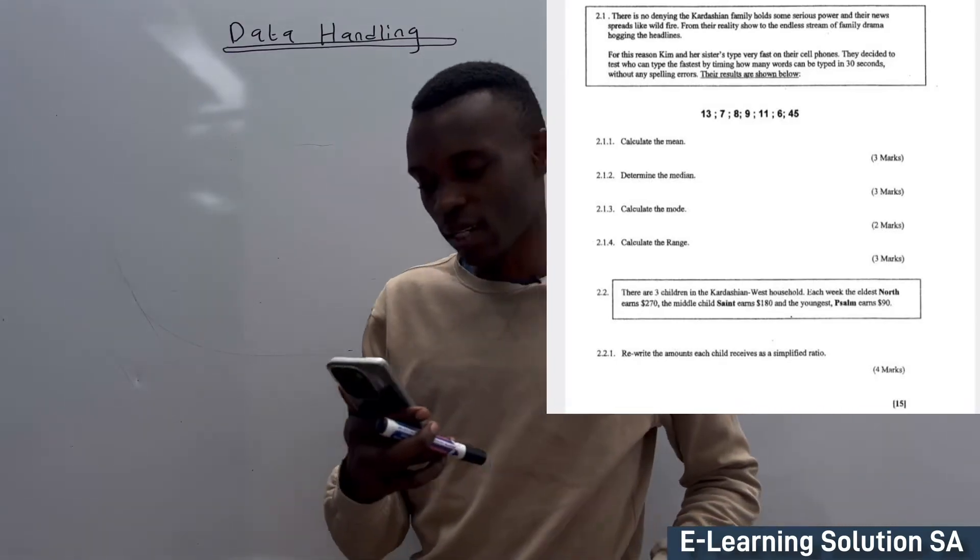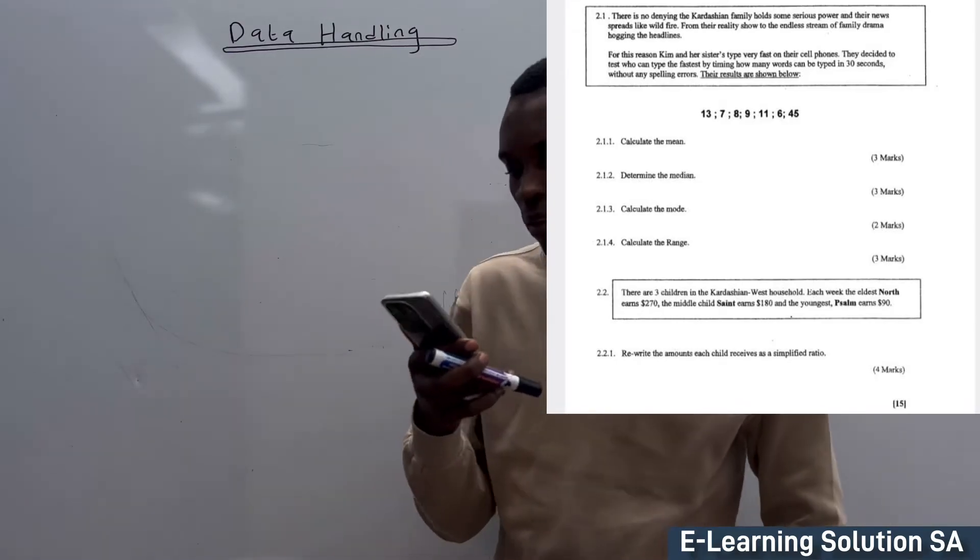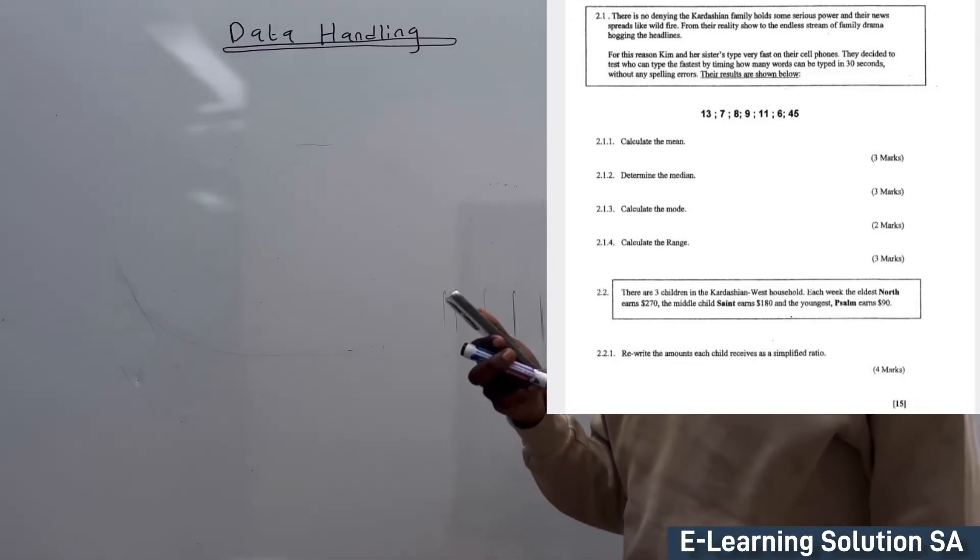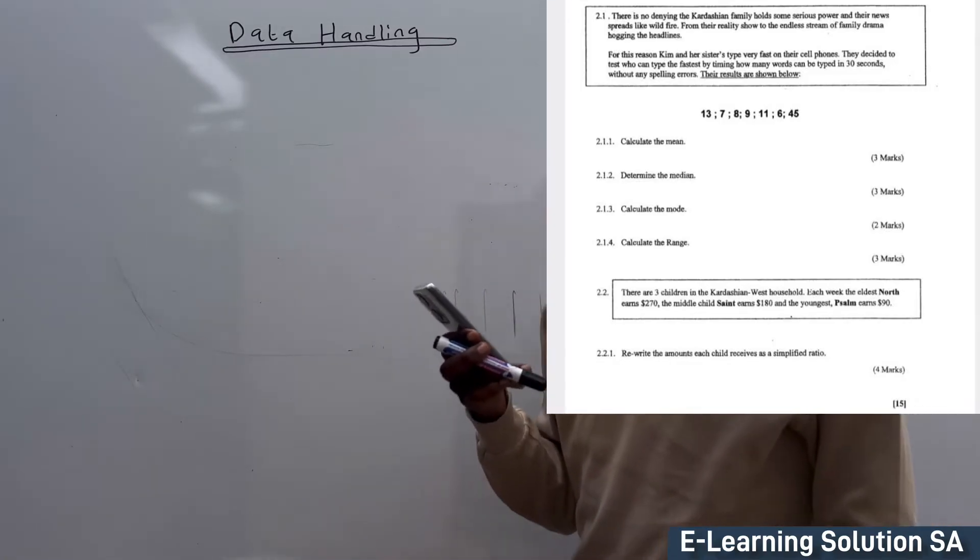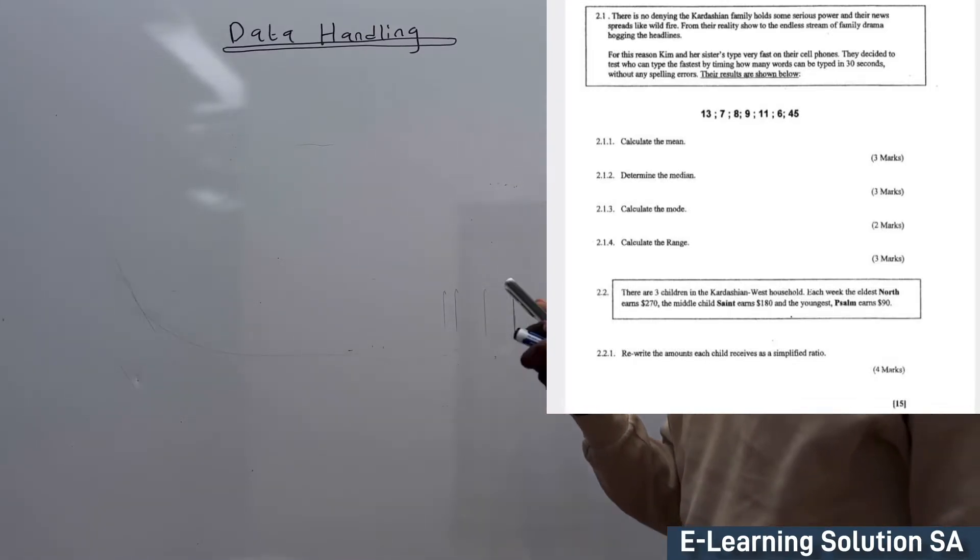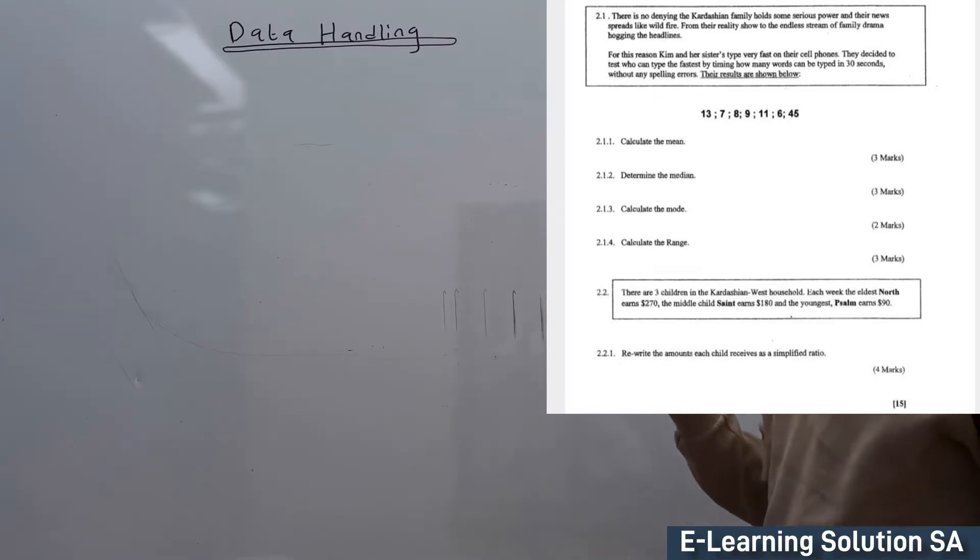Let's check the question paper. 2.1: There is no denying the Kardashian family holds some serious power. Kim and her sister decided to test who can type the fastest by timing how many words can be typed in 30 seconds without any spelling error.